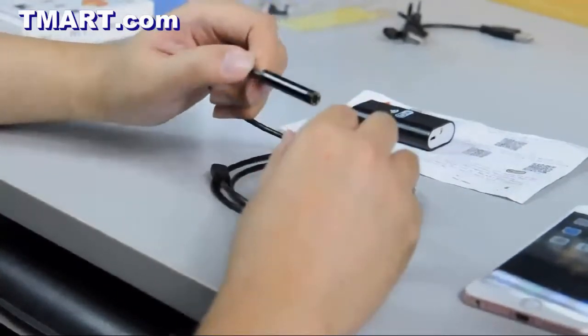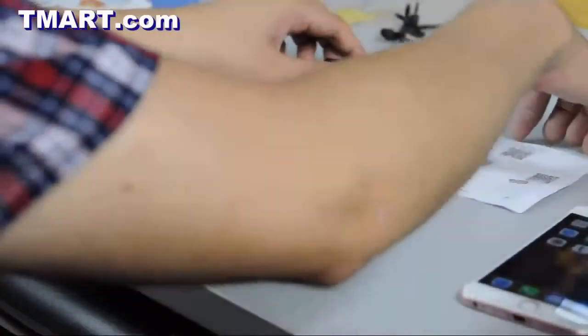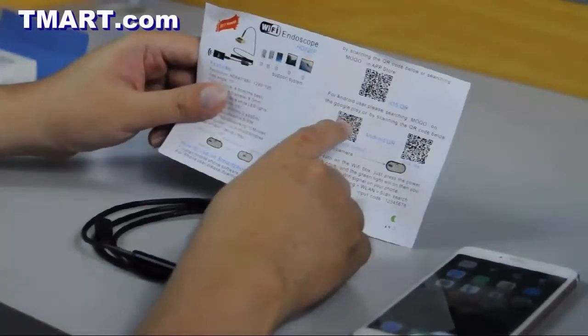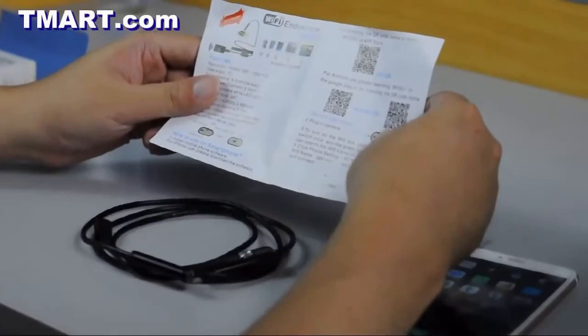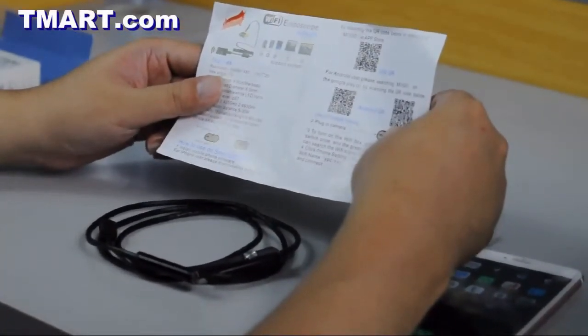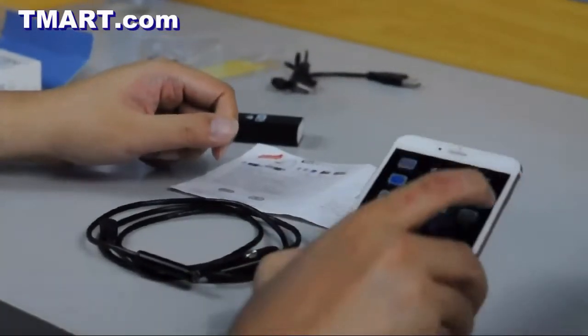To use this camera with your phone, the first thing you're going to do is download and install the camera app by scanning the QR codes on the quick start guide. Or you can simply search for the app in the Apple Store or the Play Store. As you can see, I've already had it installed here on my phone.